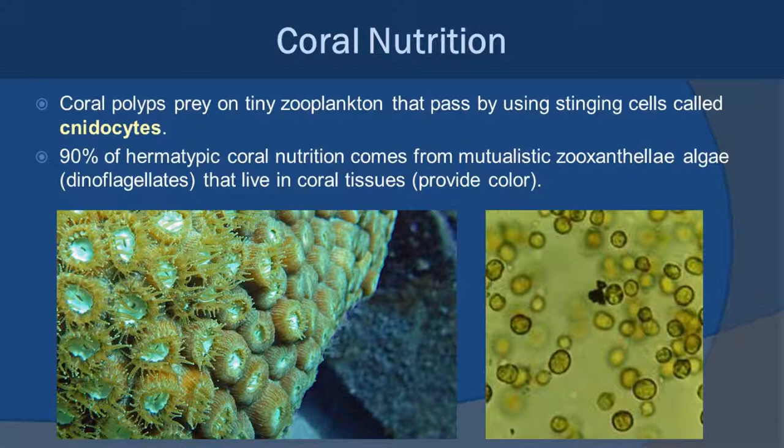The real story is the zooxanthellae — ninety percent of hermatypic coral nutrition comes from these tiny symbiotic algae. Zooxanthellae happen to be dinoflagellates, and they live as mutualistic partners embedded in the coral tissue. It's these zooxanthellae that actually give coral their color. If you take the coral out, they become very white, basically because all you have is the calcium carbonate skeletal system — and that's where the term coral bleaching comes from. That's what happens when the zooxanthellae are expelled and all you have left is the coral tissue itself.